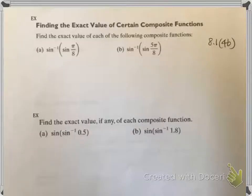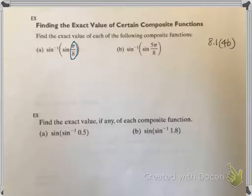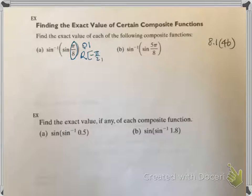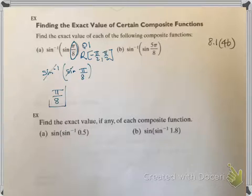Find the exact value of each of the following composite functions. Part A: inverse sine of sine of pi over eight. First question — what quadrant is this in? If you don't know, change it to degrees and you want a value between zero and ninety degrees. Pi over eight is in quadrant number one, and because quadrant one is inside the range of inverse sine, which is negative pi over two to pi over two, we're okay. Since that's the case, the inverse sine and sine cancel each other out, so the answer is just pi over eight.